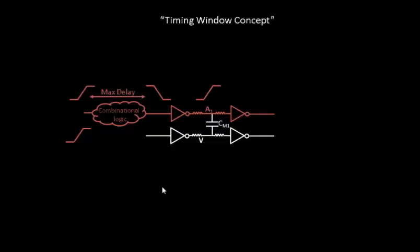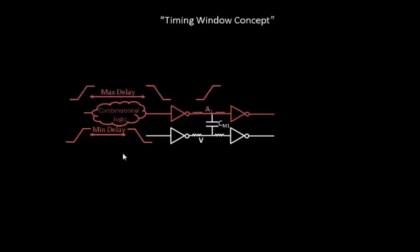identify that section on the silicon which has got the minimum delay and compute that. Minimum delay basically represents the minimum impact on the delay because of the process variation. Max delays are generally used for setup timing checks and min delays are generally used for hold timing checks, so that's why both are important. There is a range of delay variation — this is the minimum delay variation and this is the maximum delay variation.